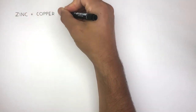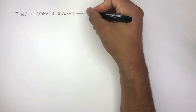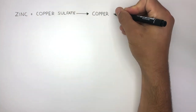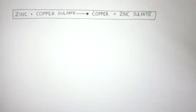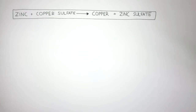When zinc reacts with copper sulfate, they react to form copper and zinc sulfate. This is an example of a displacement reaction, where zinc is more reactive than copper. So zinc displaces copper from its compound, forming zinc sulfate and copper.